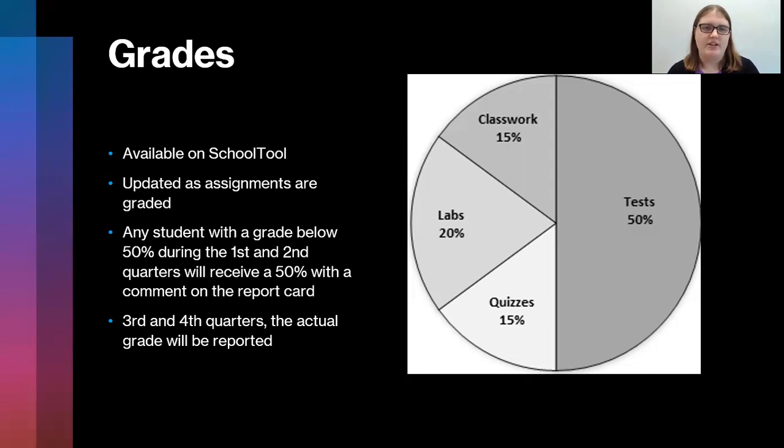The way grading is working this year, any student with a grade below 50% during the first and second quarters will receive a 50% with a comment on the report card. In third and fourth quarters, the actual grade will be reported.